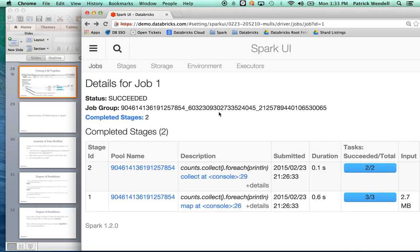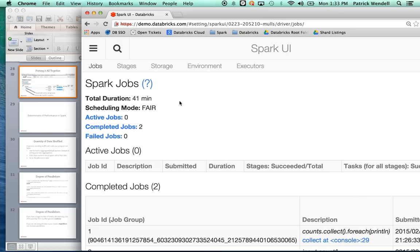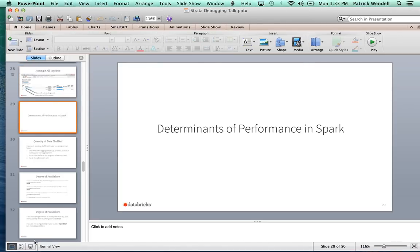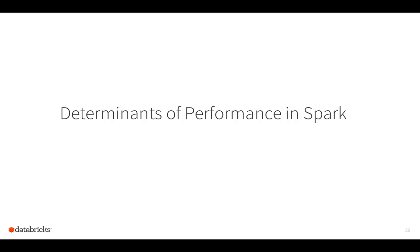That was the first big goal of this talk: to give you a way to understand physical execution, the terminology used, and how it relates to the logical thing you wrote in your program. For the second half, even if you didn't follow every aspect of that, this part is largely independent. It's a survey of things that I've seen impact performance in production Spark workloads — not all of these will impact every workload, but most will be broadly relevant.